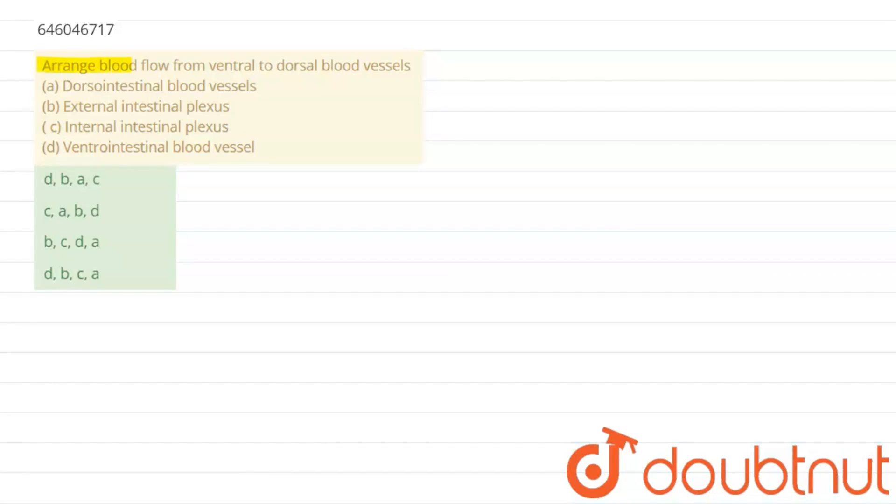The question is, arrange blood flow from ventral to dorsal blood vessels. The blood vessels given are dorsi-intestinal blood vessel, external intestinal plexus, internal intestinal plexus, and the ventral-intestinal blood vessel.